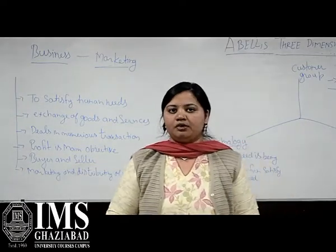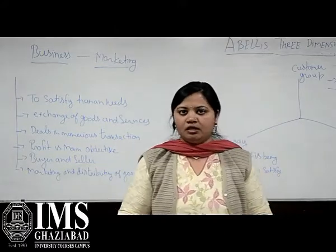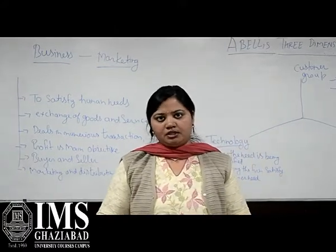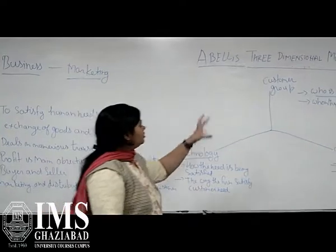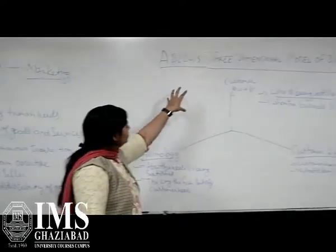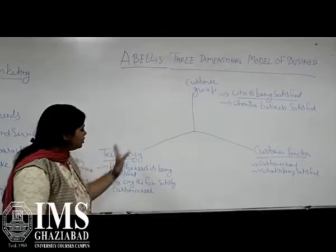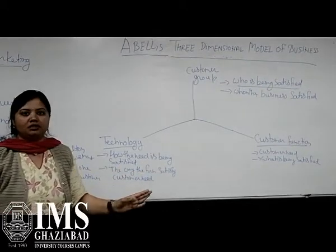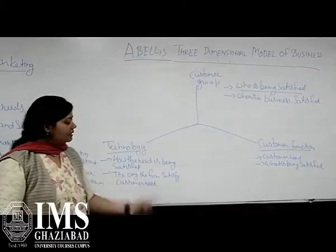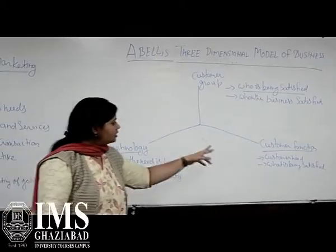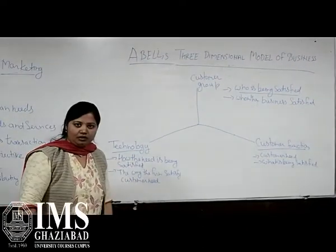There are three dimensions of business. According to Abell, there are three dimensions of business. The first one is the customer group. The second one is the customer functions. And the third one is the technology.